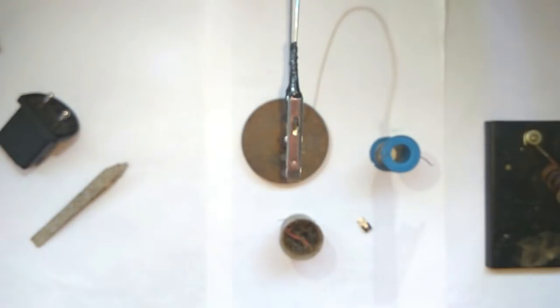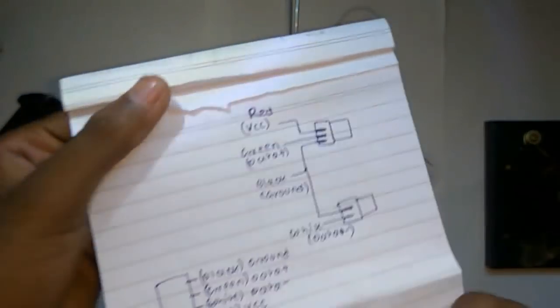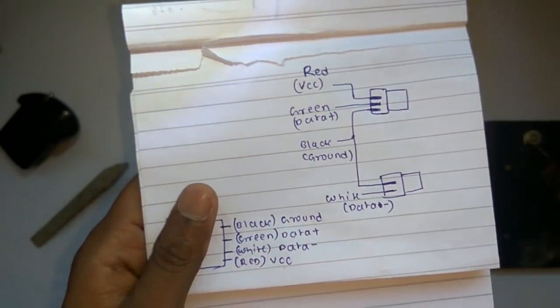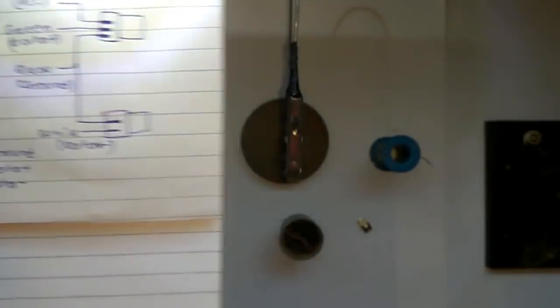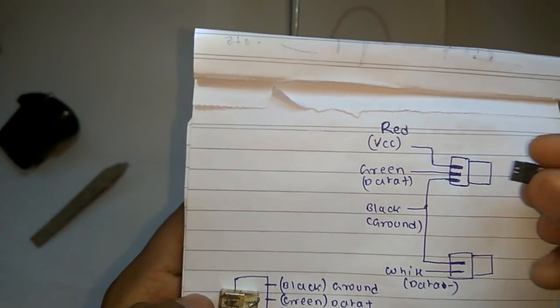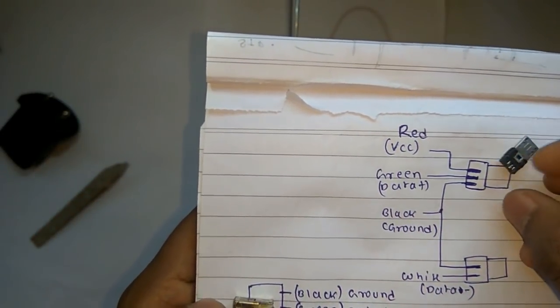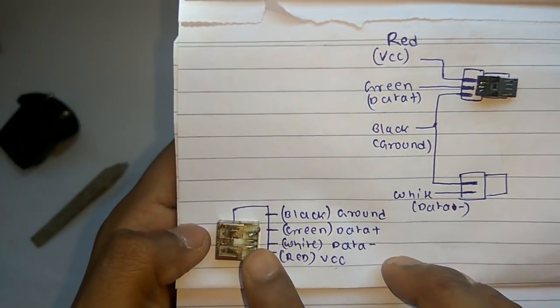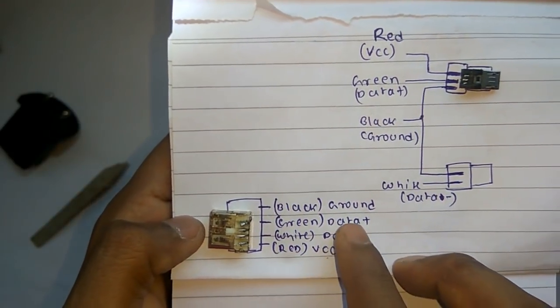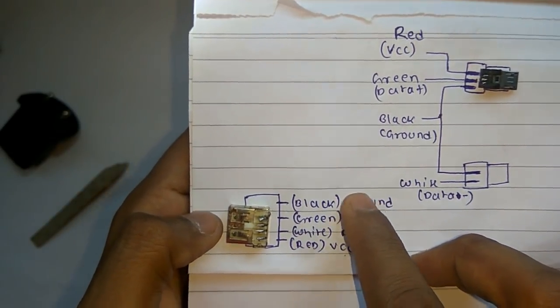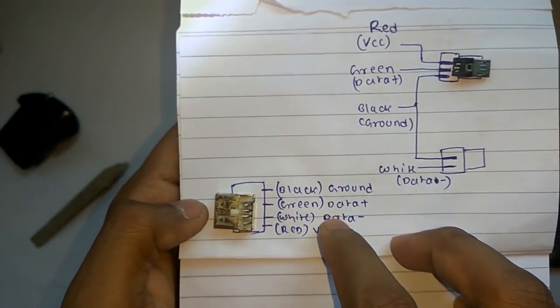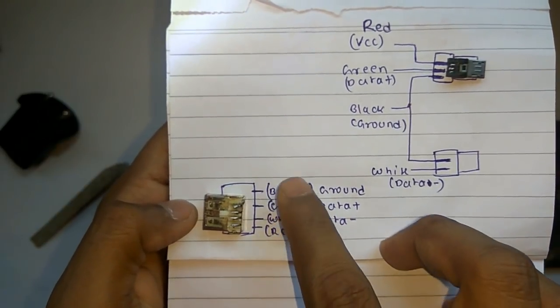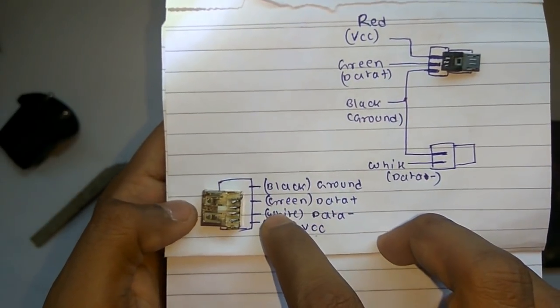We will first start with the soldering of the USB. So according to this diagram here I have made a schematic for this. Here this one is the USB female port, and this one is the mini USB. So it has 4 pins which is the VCC, data minus, data plus and ground. Now I am using black for the ground, green for the data plus, white for the data minus and red for the VCC. You can use any other combination of wires.